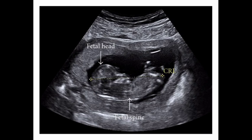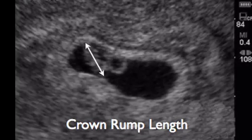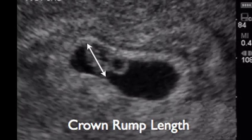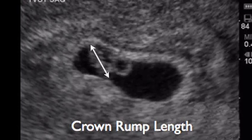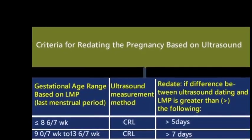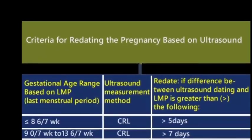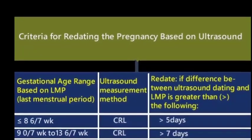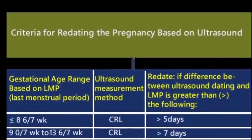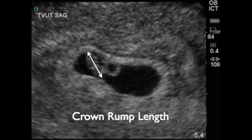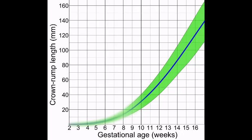The embryo becomes a fetus after 10 gestational weeks, that is 71 completed days based on the LMP. The crown rump length is predictive of fetal age with an error of 3 days at 90% confidence limits from 7 to 10 weeks, and of 5 days from 10 to 14 weeks gestation. The crown rump length grows approximately 10 mm per week from weeks 8 to 12.